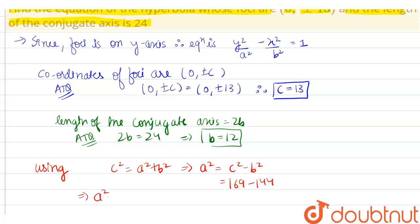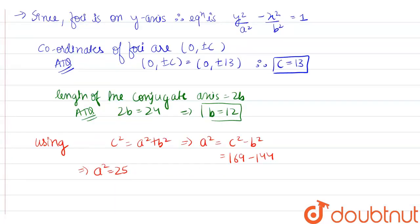It implies a² equals to 25. Since a² equals to 25, it implies a is equal to 5.